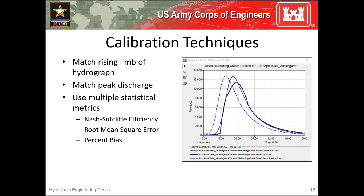When calibrating the Muskingum method, I like to start by modifying my initial estimate of k to best match the rising limb of the observed hydrograph. Then I modify X and number of sub-reaches in an attempt to match the observed peak flow rate. In this example, observed flow is shown in black and computed flow is shown in solid blue. I've matched the rising limb decently well, but my computed peak discharge is too high, so I need to decrease my X parameter and/or the number of sub-reaches. Remember to use multiple statistical metrics to gauge whether your model is accurate.